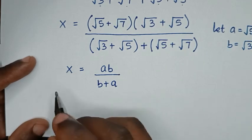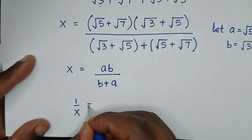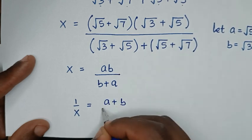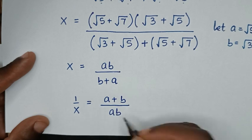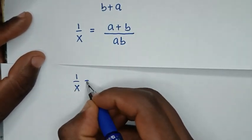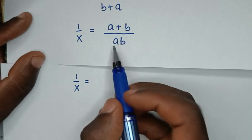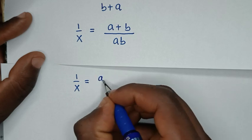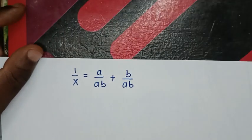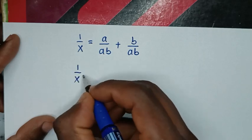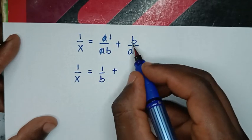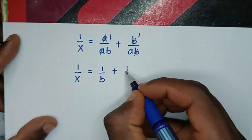Then in the next step, we take the reciprocal. 1/x equals (a + b) over ab. Then 1/x = a/ab + b/ab, which simplifies to 1/b + 1/a.